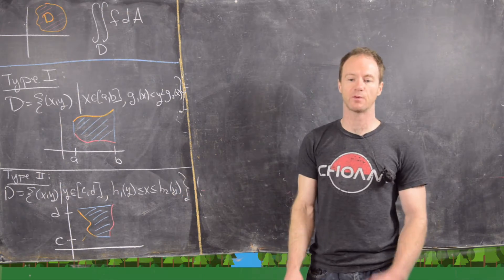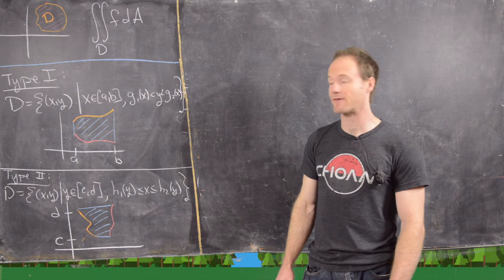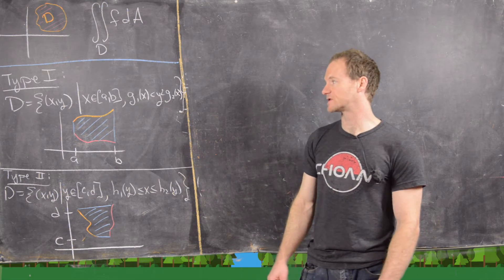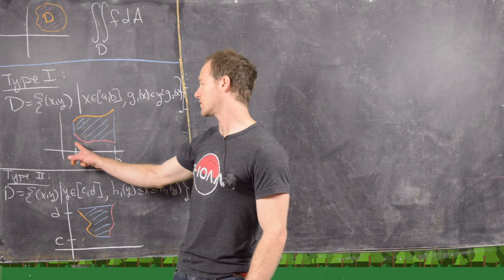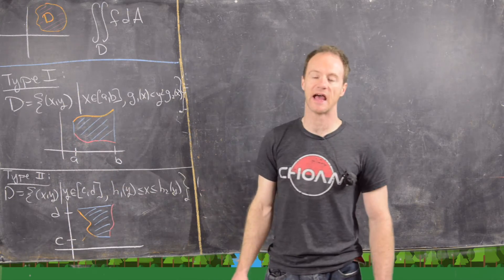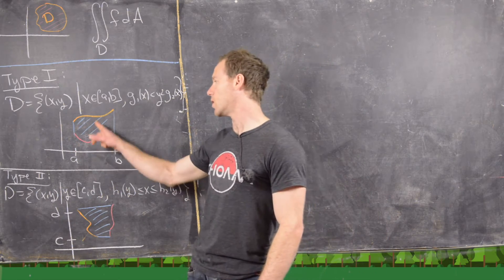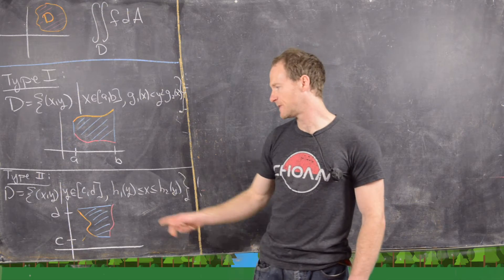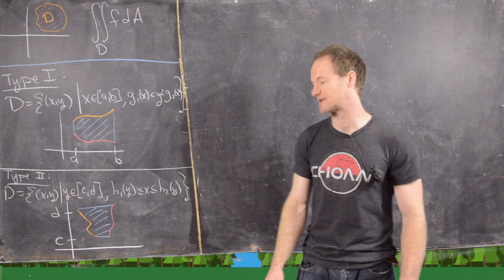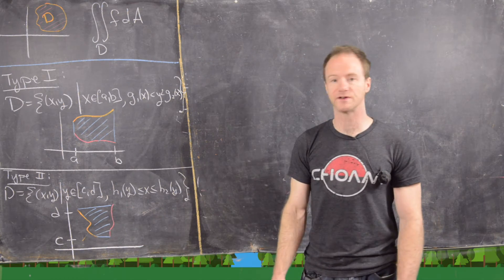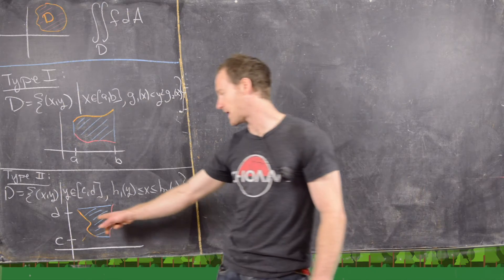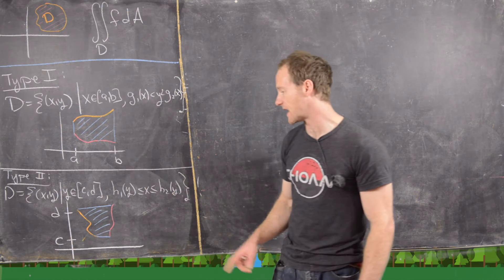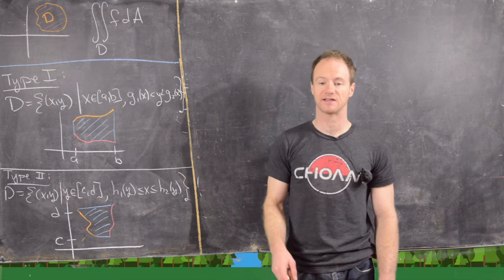We've got two main cases to look at in this video. The first is a so-called Type 1 region, which is bounded on the left and right by vertical lines x equals a and x equals b, and bounded below and above by curves g1(x) and g2(x). A Type 2 region is the same idea on its side: bounded above and below by horizontal lines c and d, and bounded on the left and right by curves h1(y) and h2(y), where x is written as a function of y.